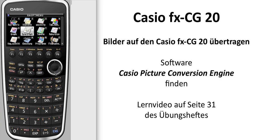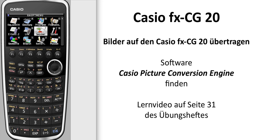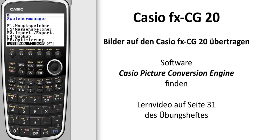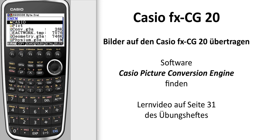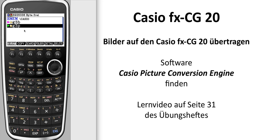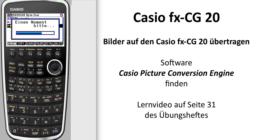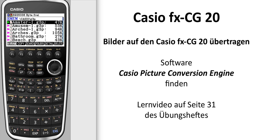We start and select in the main menu the point Memory. In Memory you select F2 for Storage Memory, and in Storage Memory you will find a folder named Casio. Press F1 for select, and then select also with F1 G3P, and here you see all pictures on your Casio you can select for calculations.